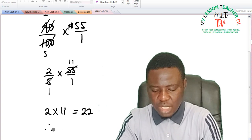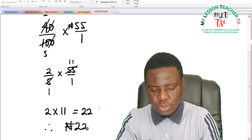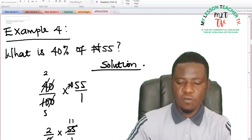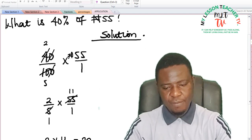So it therefore means that our answer is said to be 22 Naira. So 40% of 55 Naira is said to be 22 Naira.